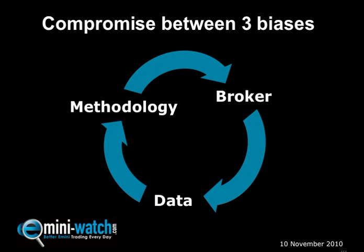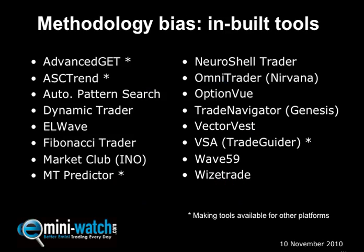As an example, let me take this one driver — the methodology bias. If you are keen on something like Fibonacci, Elliott Wave, candlestick patterns, and so on, there are charting platforms designed specifically for you. If that's the way you want to trade, you have to choose a charting platform that supports that methodology.